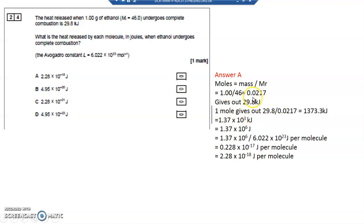So one mole, if I divide the 29.8 by 0.0217, I'm going to work out how many kilojoules of energy would be given out if I had a whole mole. One whole mole, and that's in kilojoules.